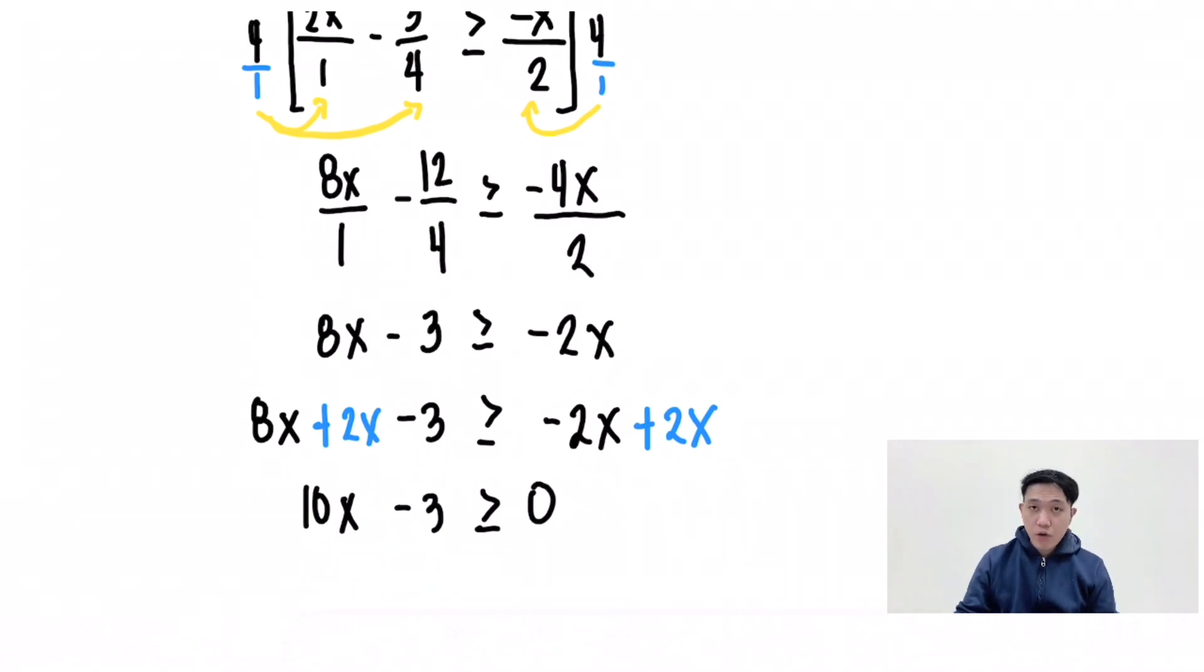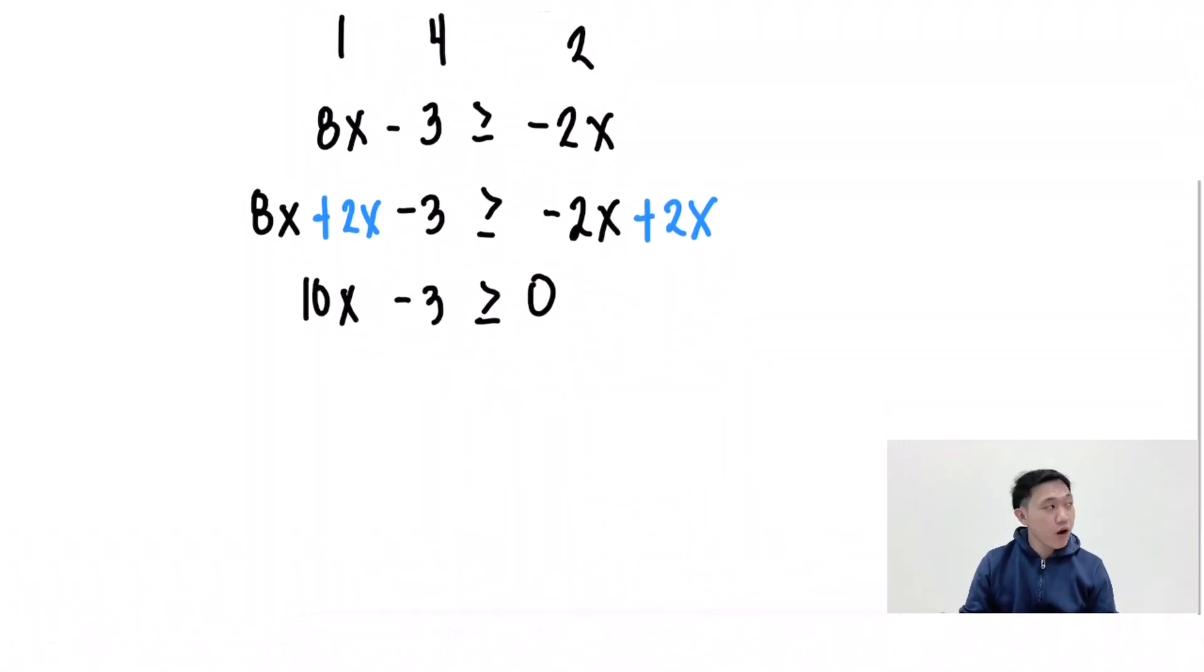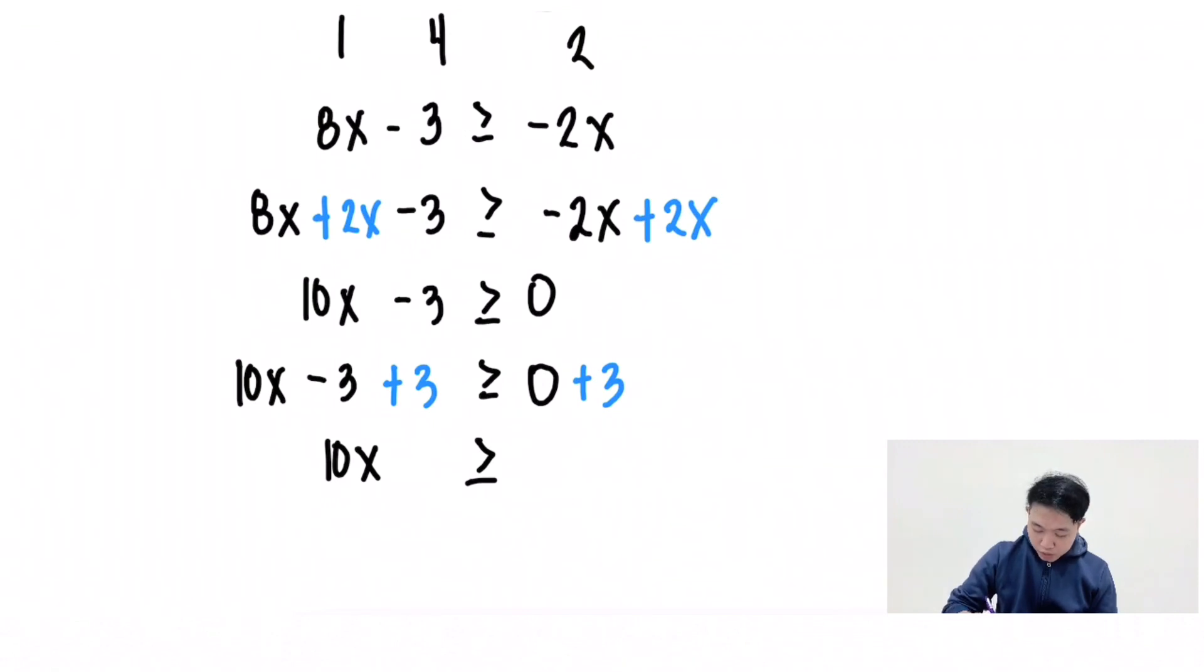Then solve for x again by applying addition property of inequality. So 10x minus 3 plus 3 greater than or equal to 0 plus 3. Then copy 10x. Negative 3 plus 3 is 0, greater than or equal to 0 plus 3 is positive 3.